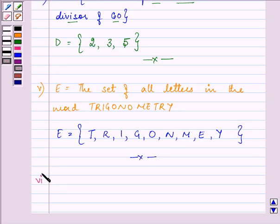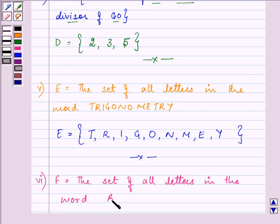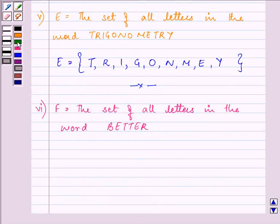Proceeding on with the last and final part. Now here we are given the set of all letters in the word better. So here our answer will be B, E, T. T is again coming, E is again coming, and R.